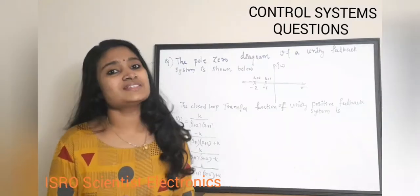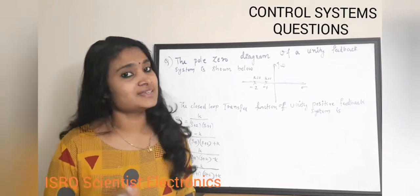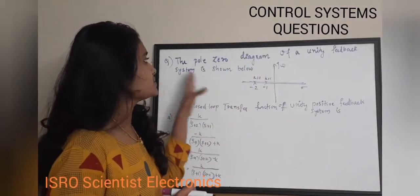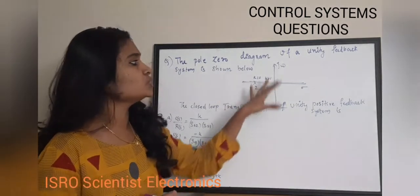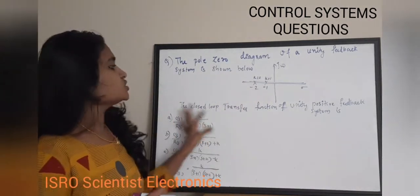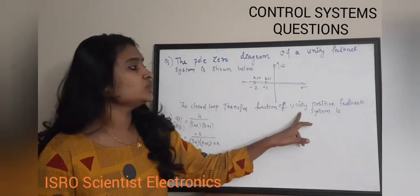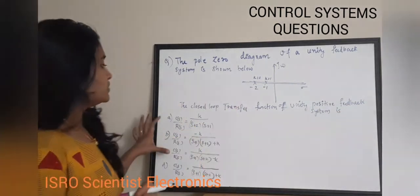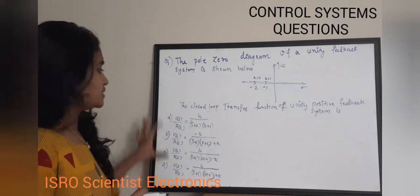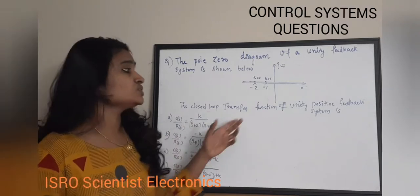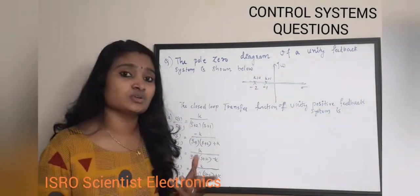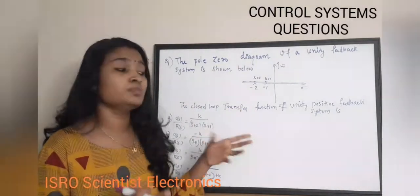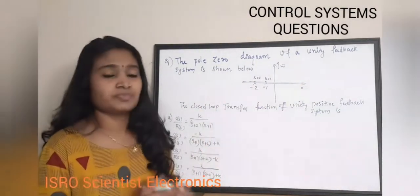The first question we are going to discuss today is: the pole-zero diagram of a unity feedback system is shown below. From this pole-zero plot, we need to find the closed loop transfer function of a unity positive feedback system, choosing from the given transfer function options.